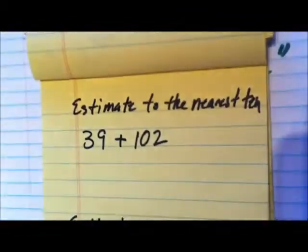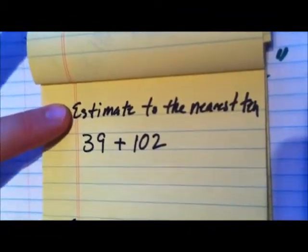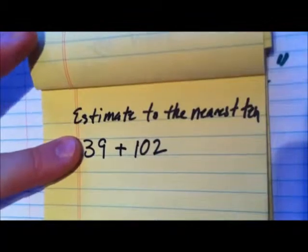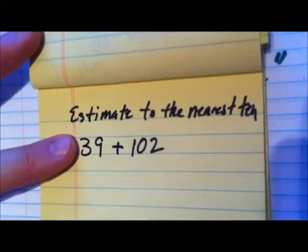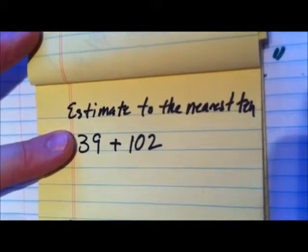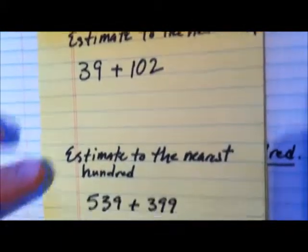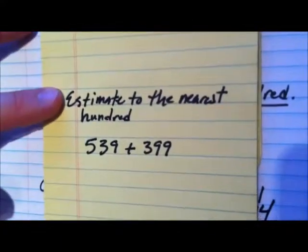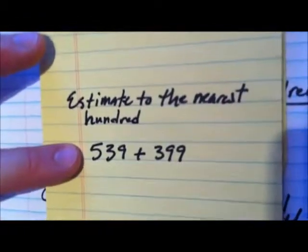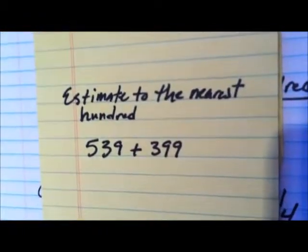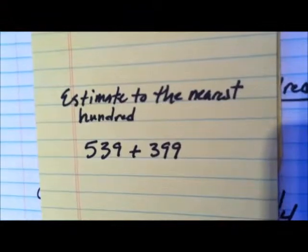Here are your tasks. First, estimate this problem to the nearest ten: 39 plus 102. Remember, round and then solve. Then estimate to the nearest hundred: 539 plus 399. Re-watch these videos as you need.